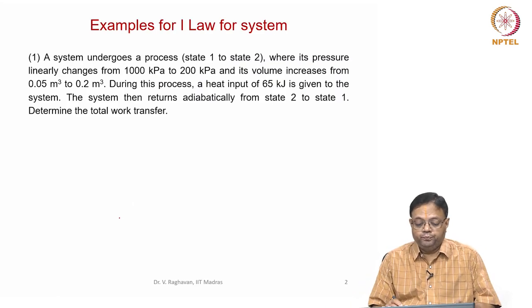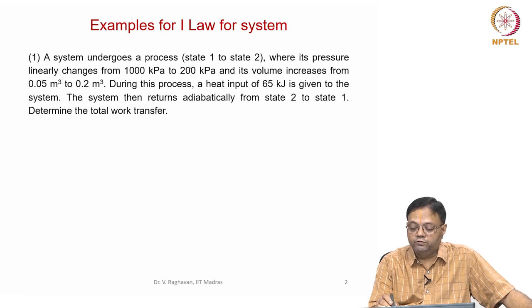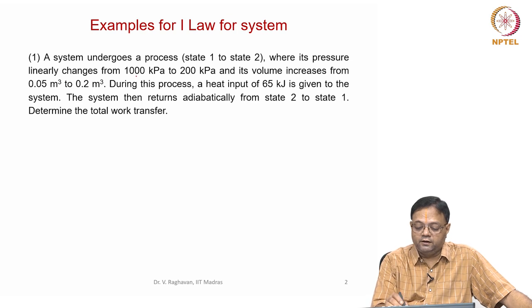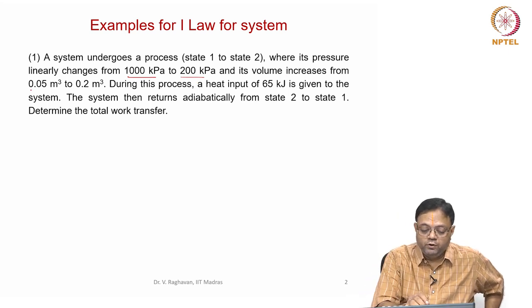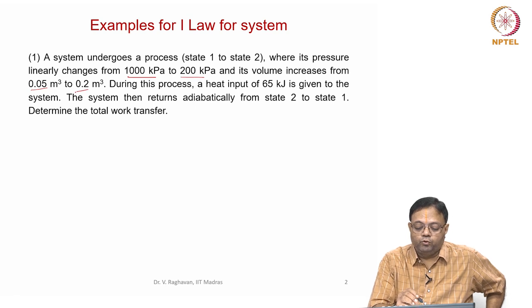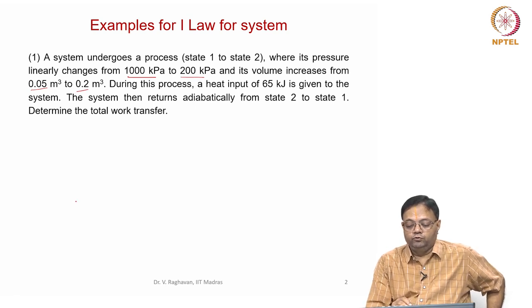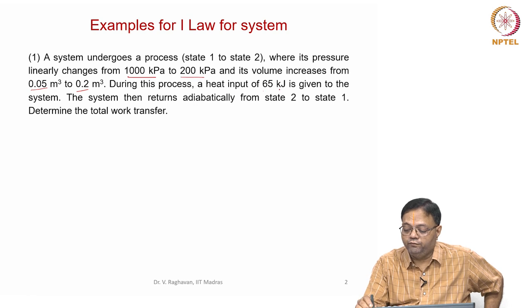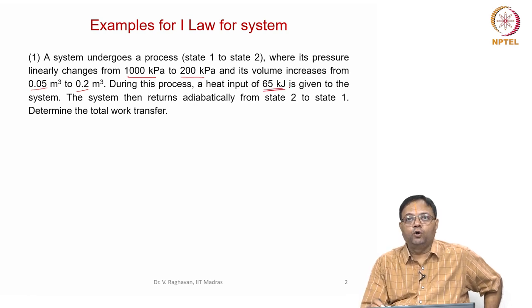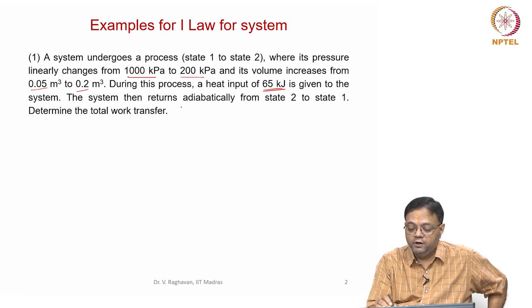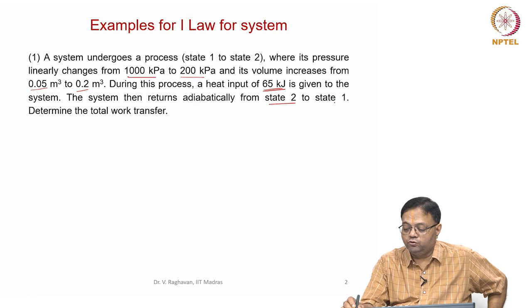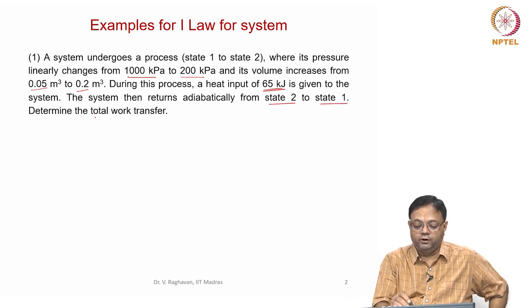The first problem: a system undergoes a process from state 1 to state 2, where its pressure linearly changes from 1000 kilopascals to 200 kilopascals and volume increases from 0.05 meter cube to 0.2 meter cube. During this process, a heat input of 65 kilojoules is given to the system. The system then returns adiabatically from state 2 to state 1. Determine the total work transfer.